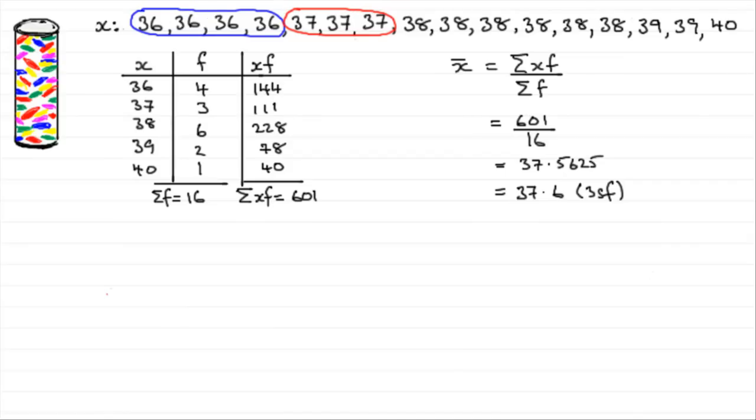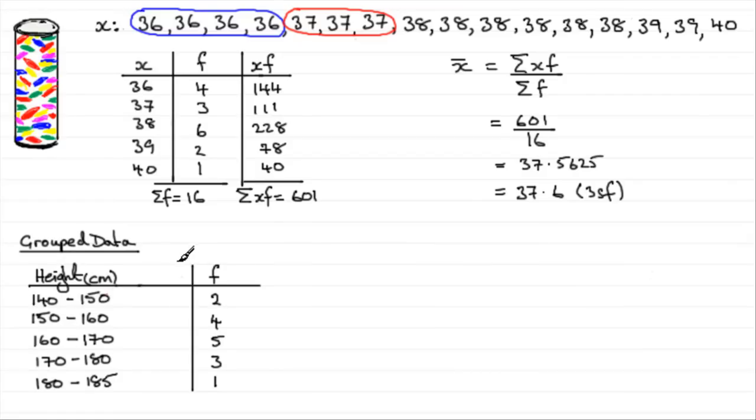But sometimes you'll get continuous data. Say, for instance, the height of people. And I've got a table here where we've got the height of a number of people. The height measured in centimetres. And what I've done is I've grouped those measurements up into what is called classes.